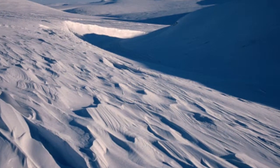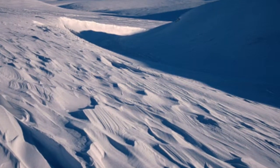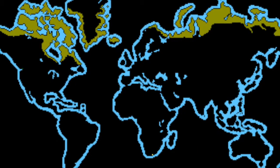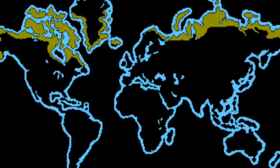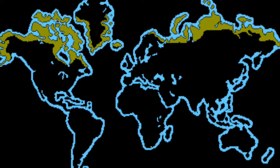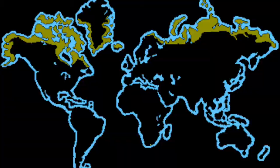Some examples of tundra locations include northern Alaska, Canada, Greenland, Scandinavia, Siberia, Finland, Norway, Russia and Sweden.